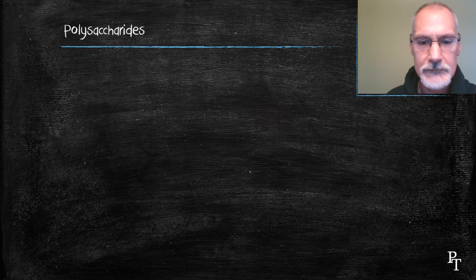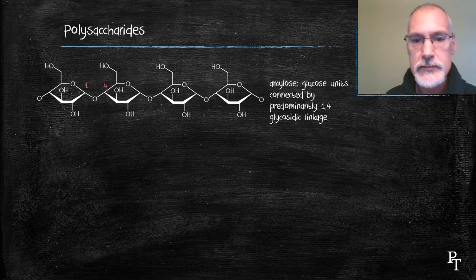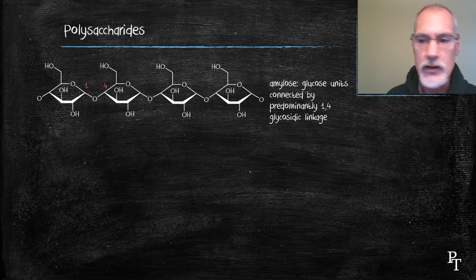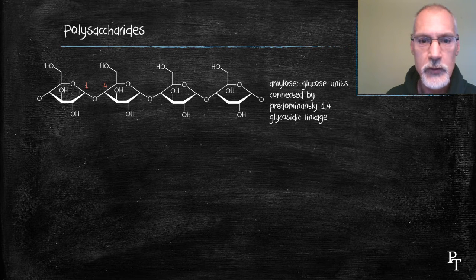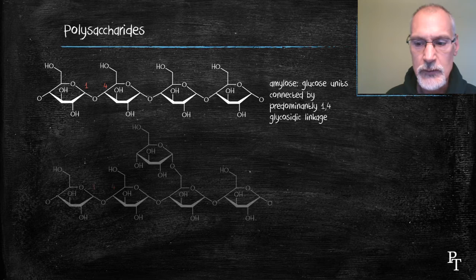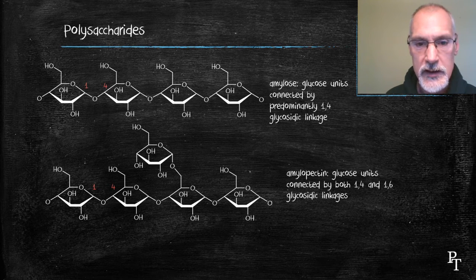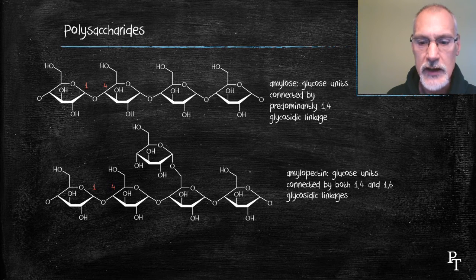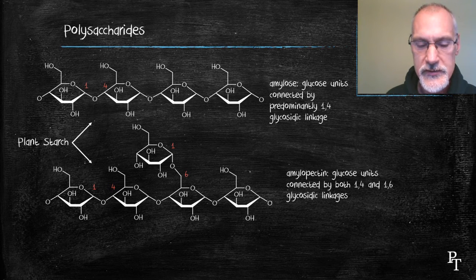Finally, polysaccharides. Here, if I continue the condensation reaction and continue to remove water molecules, I'll create something called amylose, which essentially is connected by 1,4 glycosidic linkages. Here's a relative of amylose called amylopectin. You'll notice the presence again of the 1,4 linkage. But in addition, we also get 1,6 linkages leading to branches off the chain. Both of these are what are called plant starches.